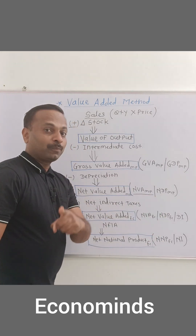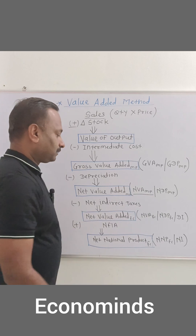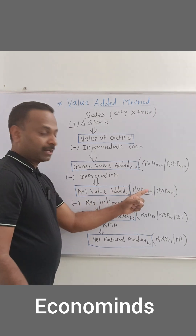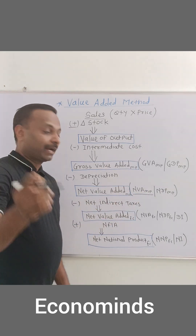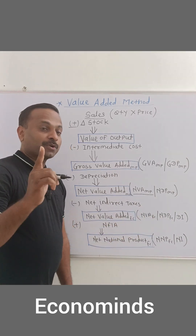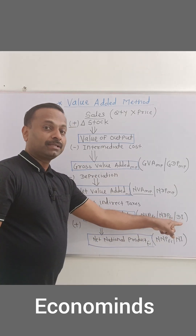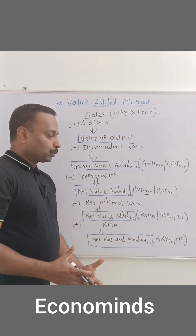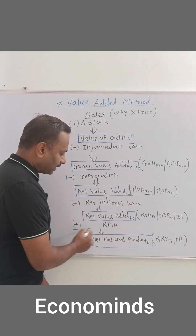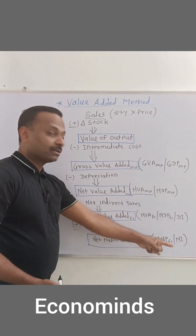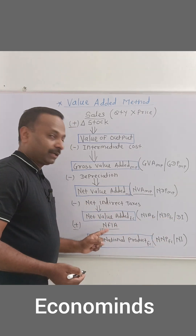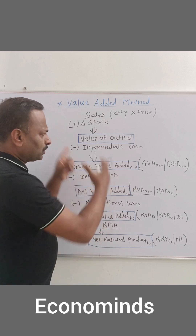Then subtract net indirect taxes (NIT) from net value added at market price to get net value added at factor cost, also known as net domestic product at factor cost, which is also known as domestic income. To calculate national income from domestic income, simply add NFI — net factor income from abroad — and you will arrive at national income.